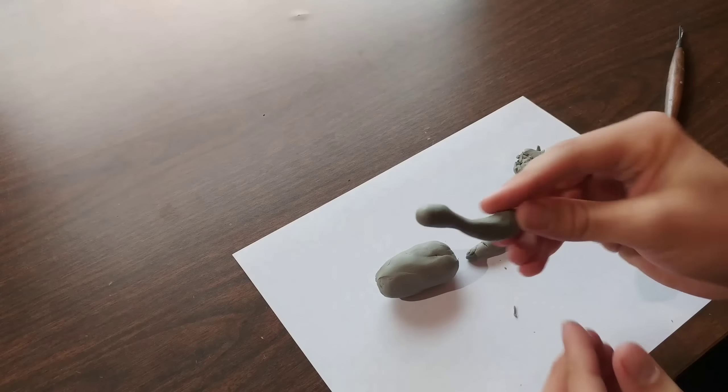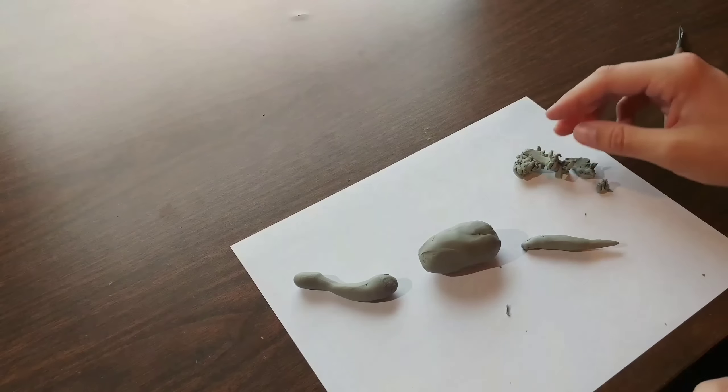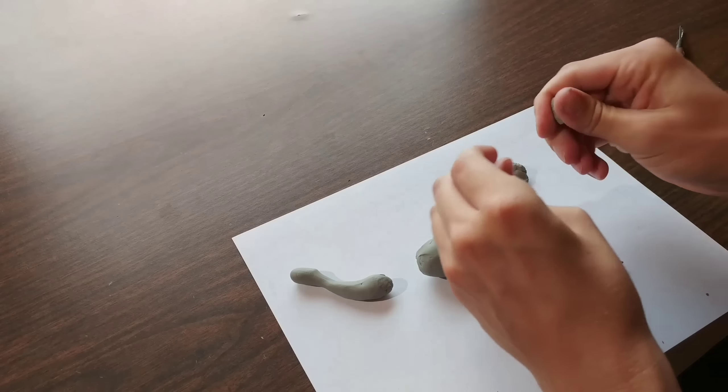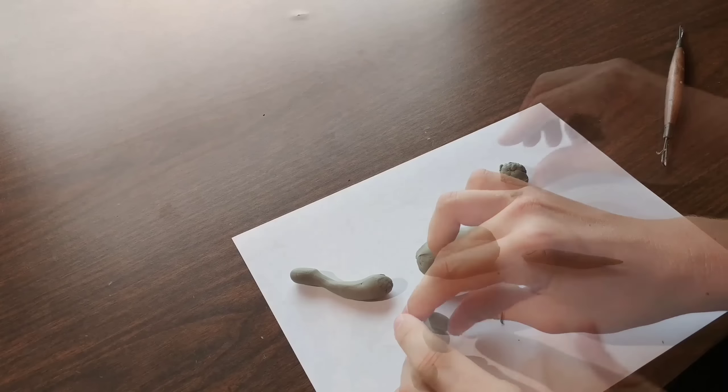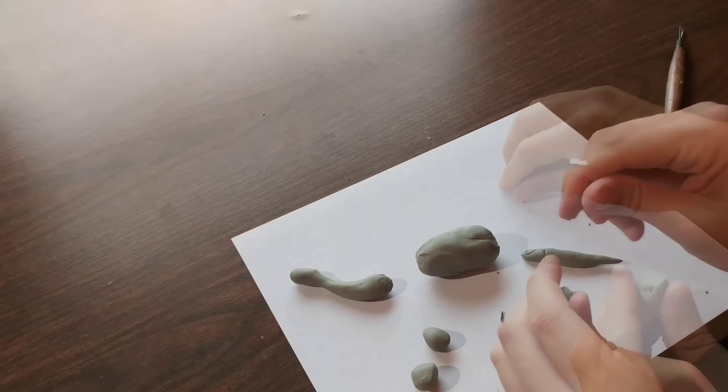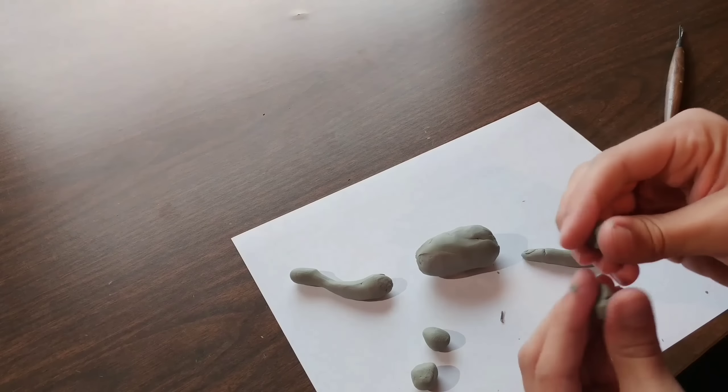Go ahead and curve that a little bit and just set that down. We'll come back to that here in a second. So now we are going to create the feet or the legs I should say. So roll up two equally sized pieces of clay for the front and then for the back.